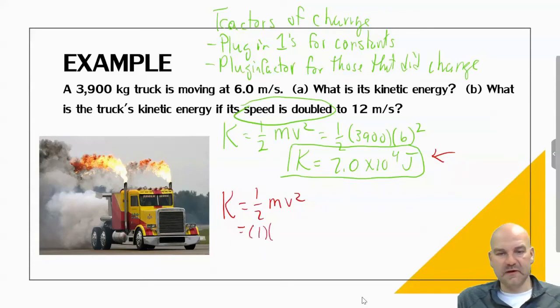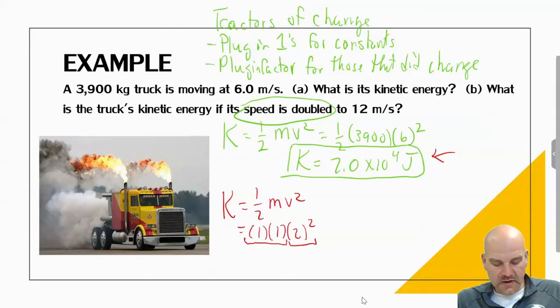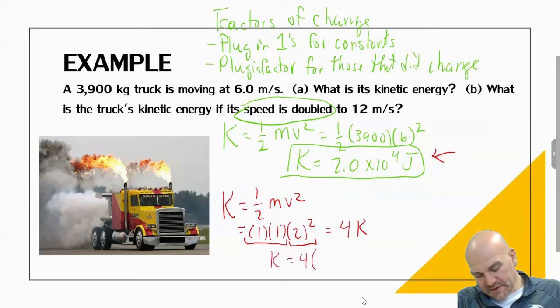But now I doubled the speed. So these are my step one up there, this is my step two. And so my kinetic energy changed by a factor of four. So I quadrupled my kinetic energy by doubling my speed. So what does that mean? All I have to do is four times my original. So four times 7 × 10⁴, and I get 2.8 × 10⁵ joules.